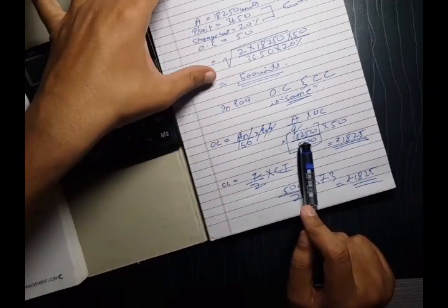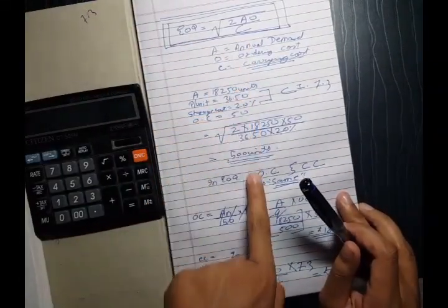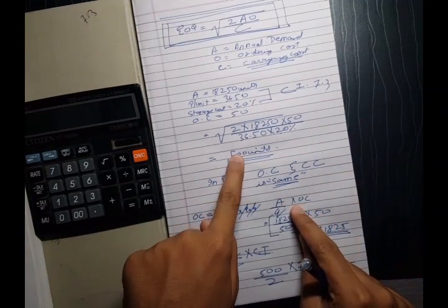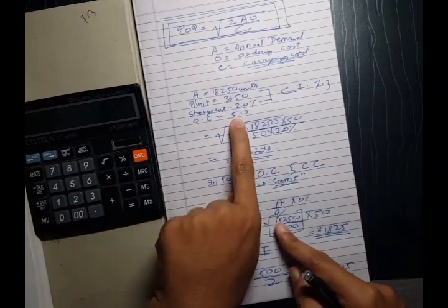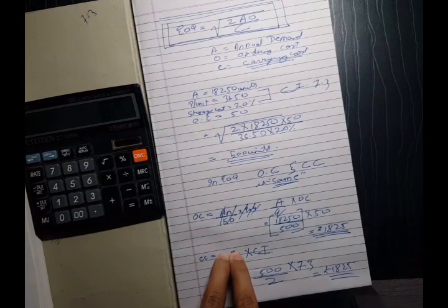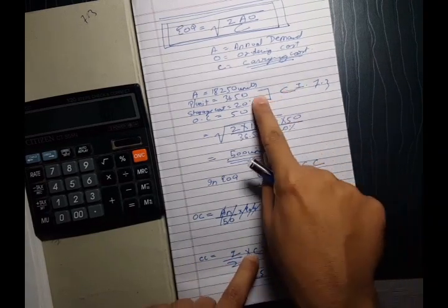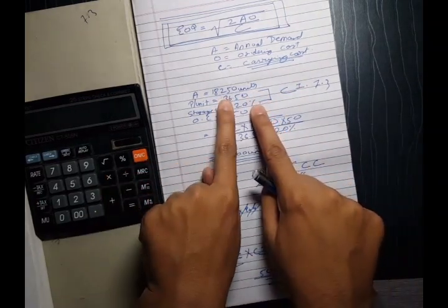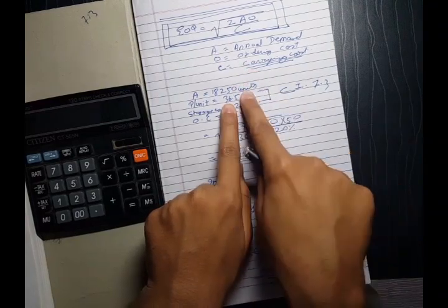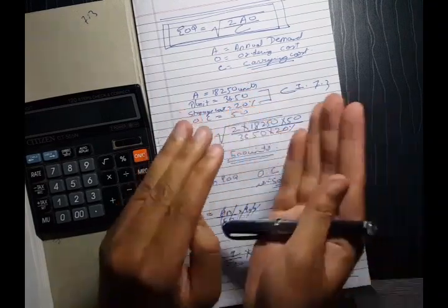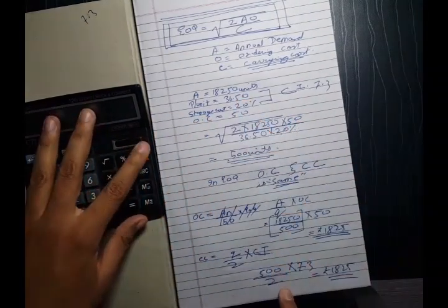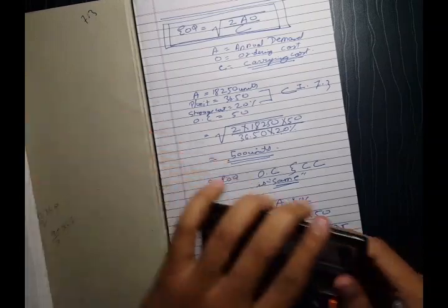So to check whether EOQ is right or wrong: first calculate EOQ using the formula 2AO upon C to get 500 units. Then apply ordering cost: annual demand divided by EOQ quantity multiplied by ordering cost per order. For carrying cost: quantity divided by 2 into CI, where CI is cost per unit into storage cost percentage (36.50 into 20%). If both match, EOQ is correct.